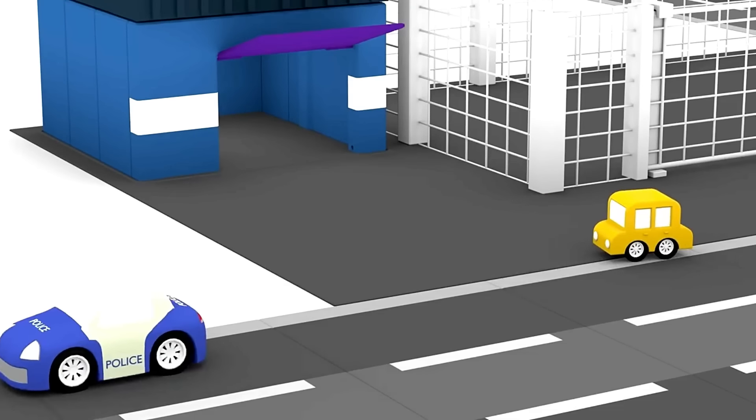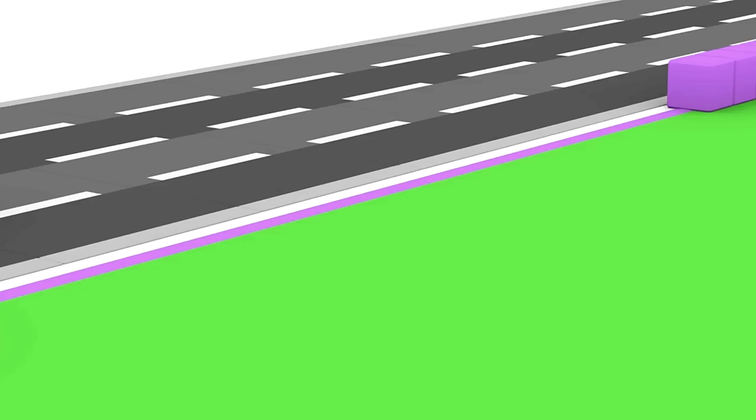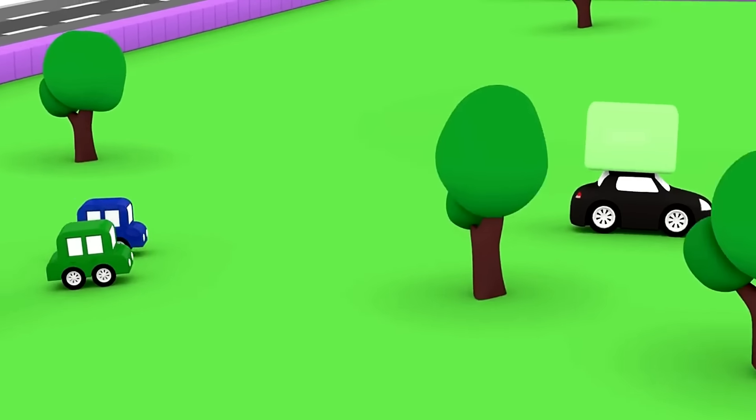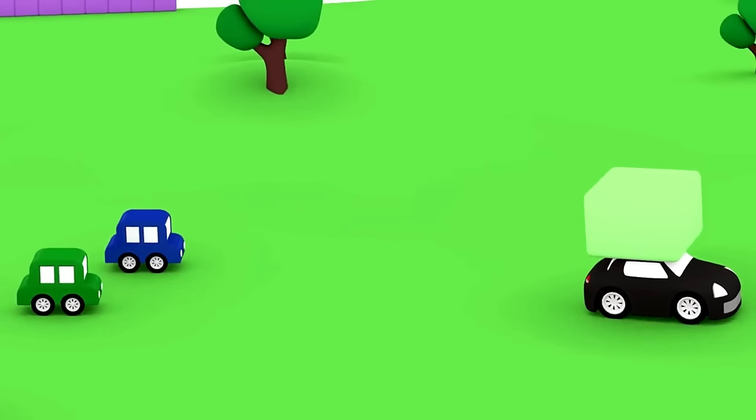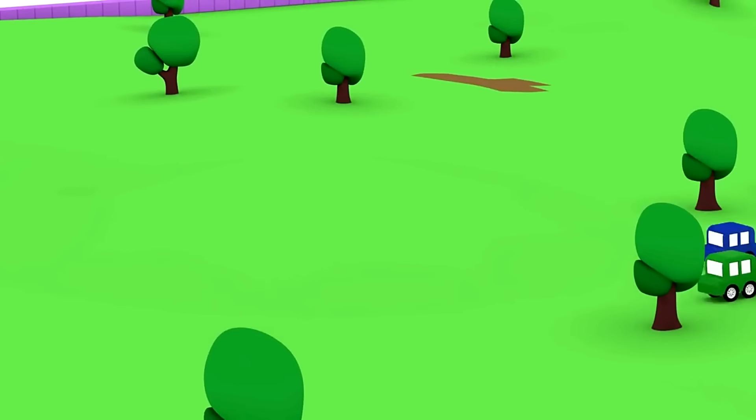Maybe the police car can help to catch the black car and stop him stealing blocks. The blue and the green cars are still chasing the black car.